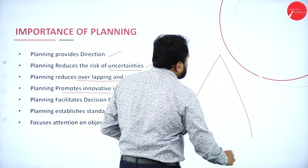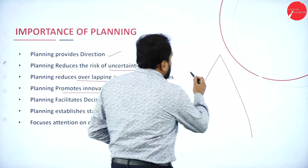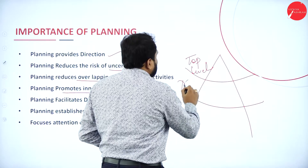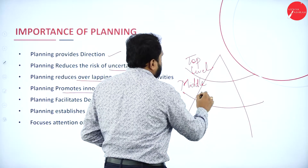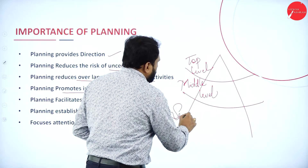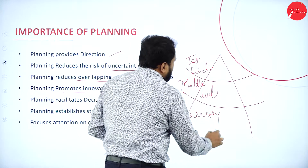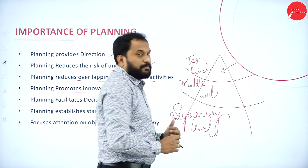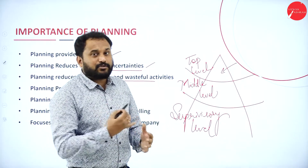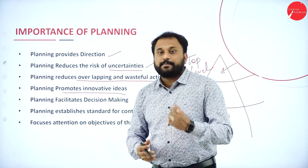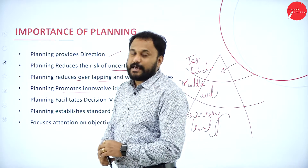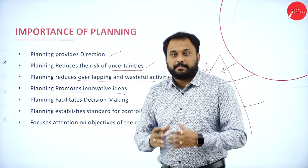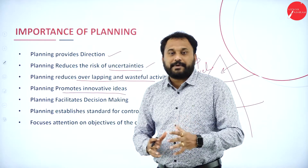Planning promotes innovative ideas. When planning is done at the top level, management has three tiers: top level, middle level, and supervisory level. When top-level management plans, they ask for suggestions from all levels — what will be the best course of action? For example, Henry Ford started Ford Motors in Britain and was proud that his cars were affordable for everybody.